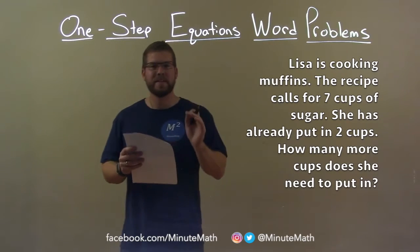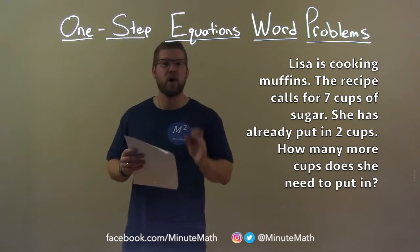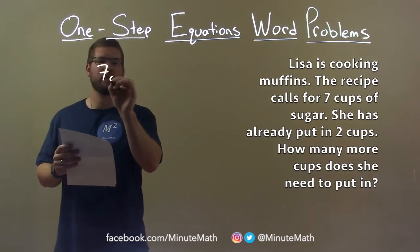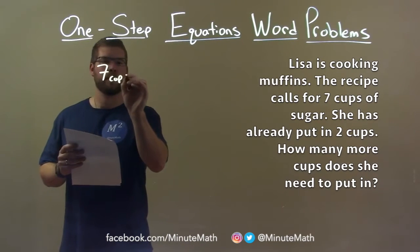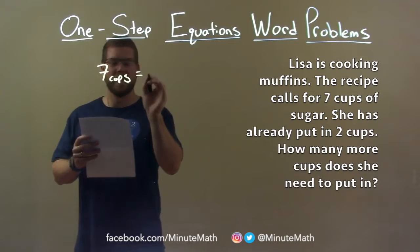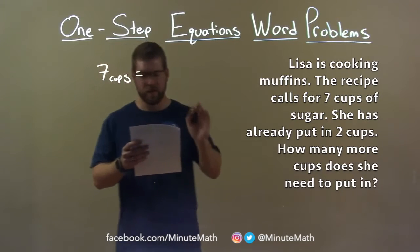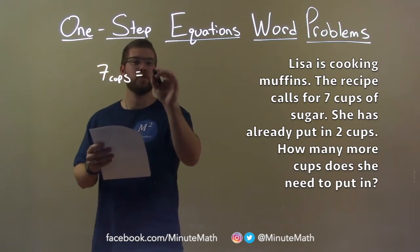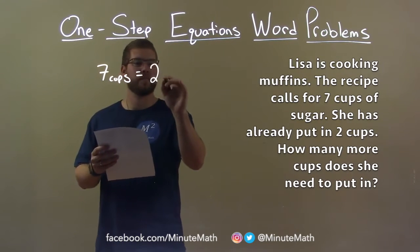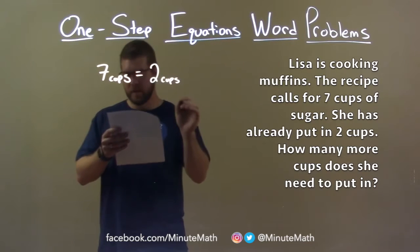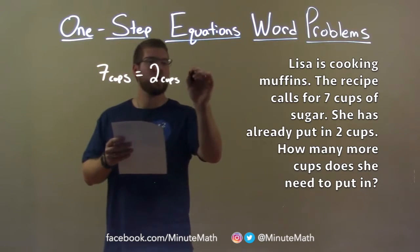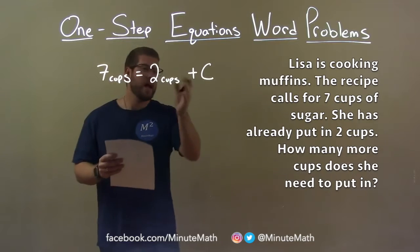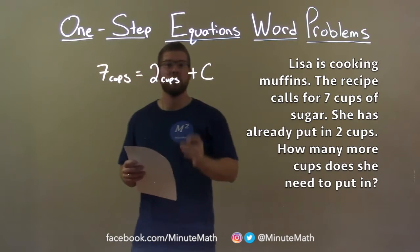The recipe calls for seven cups of sugar, so there's seven cups. That seven cups is going to equal the amount of cups that she's already put in, which is two cups, plus how many more cups she needs to put in — call that C.